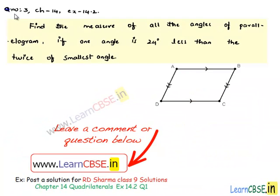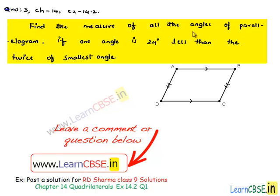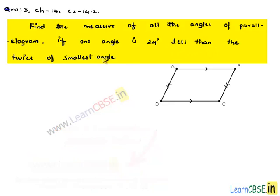Now, let us discuss question number 3, chapter 14, exercise 14.2. The question given is: find the measure of all the angles of a parallelogram if one angle is 24 degrees less than twice the smallest angle.